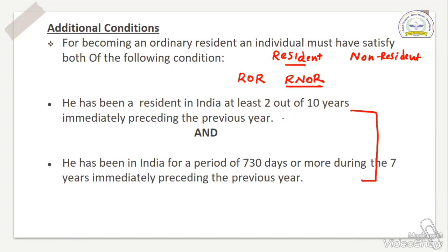Apart from 22-23, he needs to satisfy two out of ten years — for resident, there will be 182 days. The second additional condition is: he has been in India for a period of 730 days or more during the seven years immediately preceding the previous year. If anyone is satisfying both these conditions, he will be treated as resident and ordinary resident.